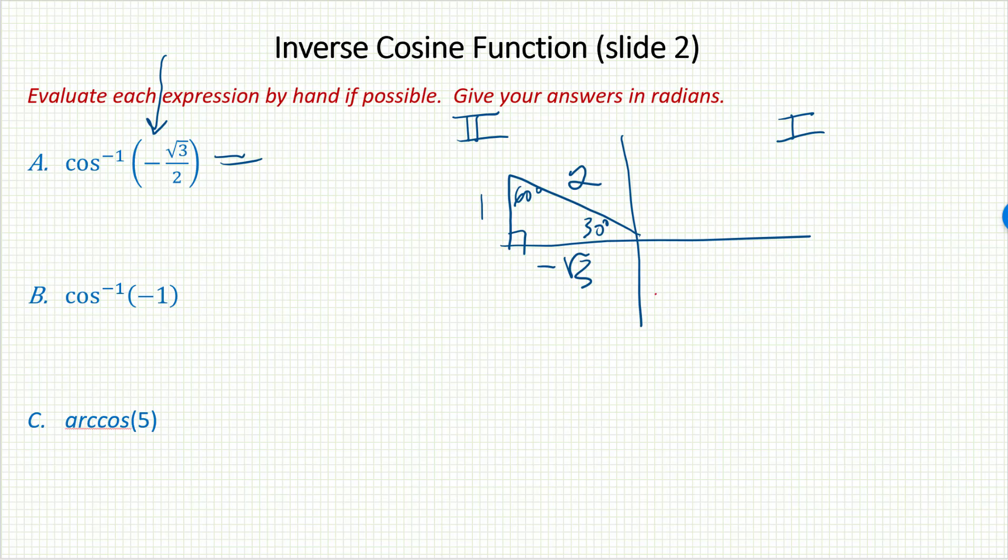Well, what angle do I give? I give an angle between 0 and π that lands at that spot. Looks like I've got a second quadrant angle here. If this is 30, then what's left must be 150 degrees or, in radians, 5π over 6.